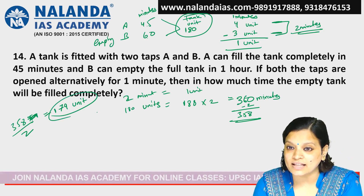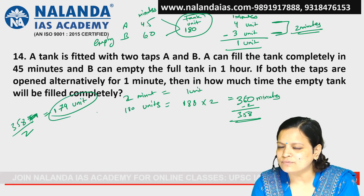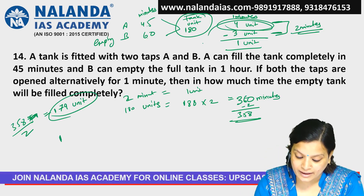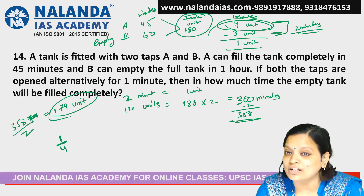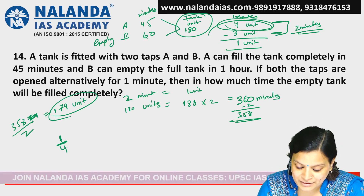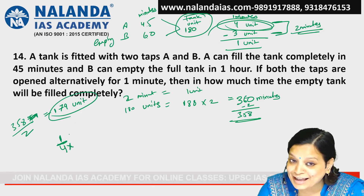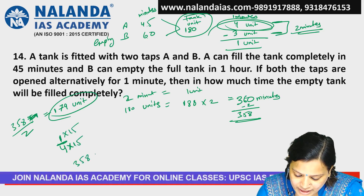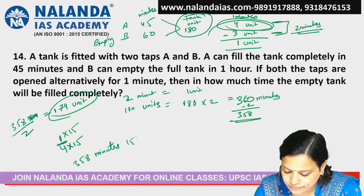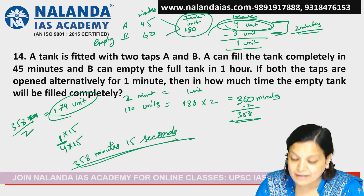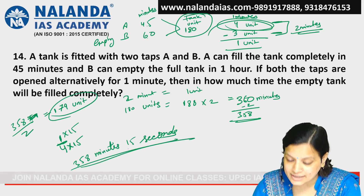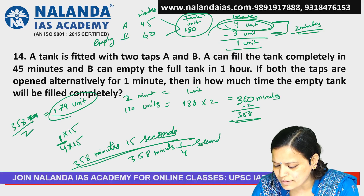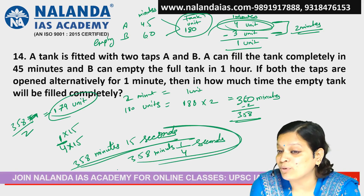So 179 units are filled in 358 minutes. Now only 1 unit remains. Since A fills 4 units in 1 minute, to fill just 1 unit A takes 1/4 of a minute. Converting: 1/4 of a minute is 15 seconds. So the total time is 358 minutes and 15 seconds. That is the answer — I hope this is clear.